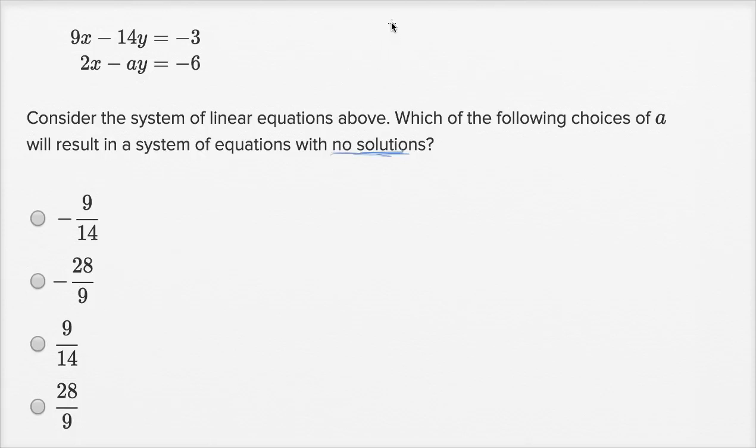So a system has no solutions if both lines, and these are both linear equations, they actually tell us these are linear equations, is if you have two lines that are parallel. Then you have no solutions. They're never going to intersect.